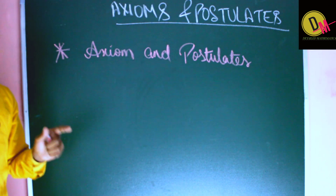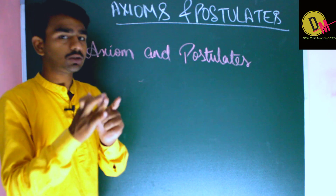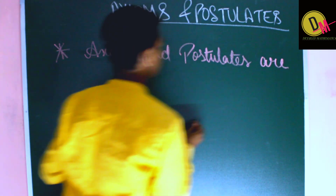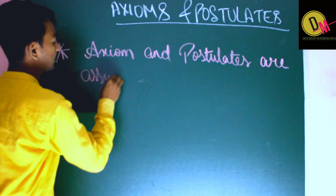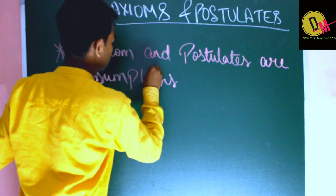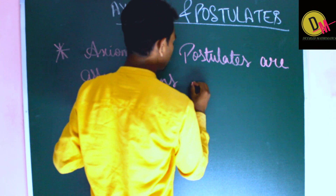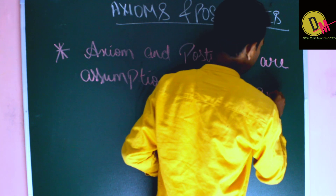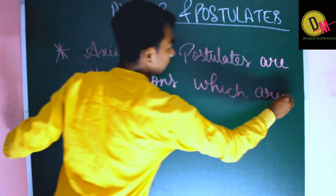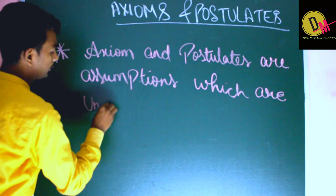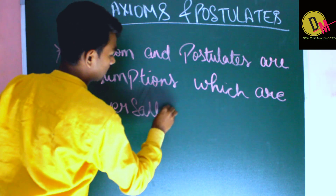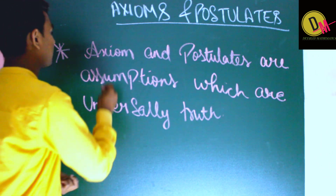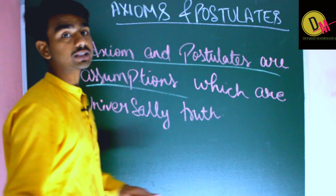Now, in older times people didn't know the difference, but nowadays we make a difference between axioms and postulates. Axioms and postulates are assumptions — but both axioms and postulates are assumptions which are universally true.